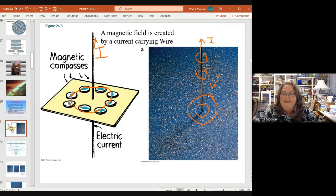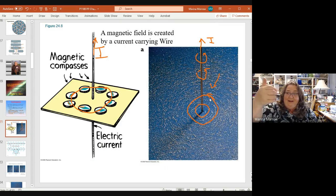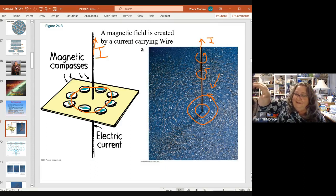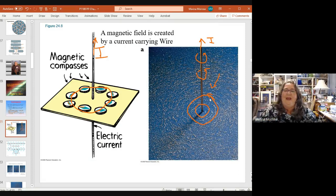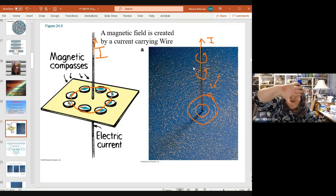In physics we know this from the right-hand rules. Our thumb is the current and the magnetic field lines are the curl of the hand. Stick your thumb out, wrap your fingers, and that's the direction of the magnetic field. If the current goes downward, it goes the opposite direction.